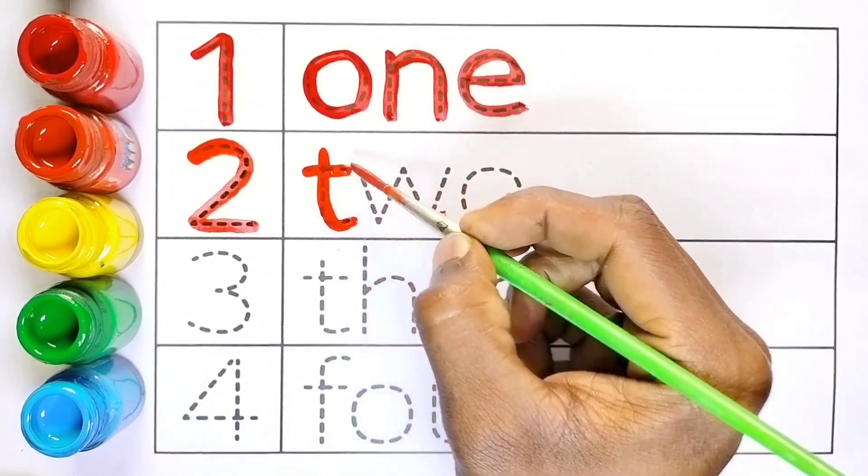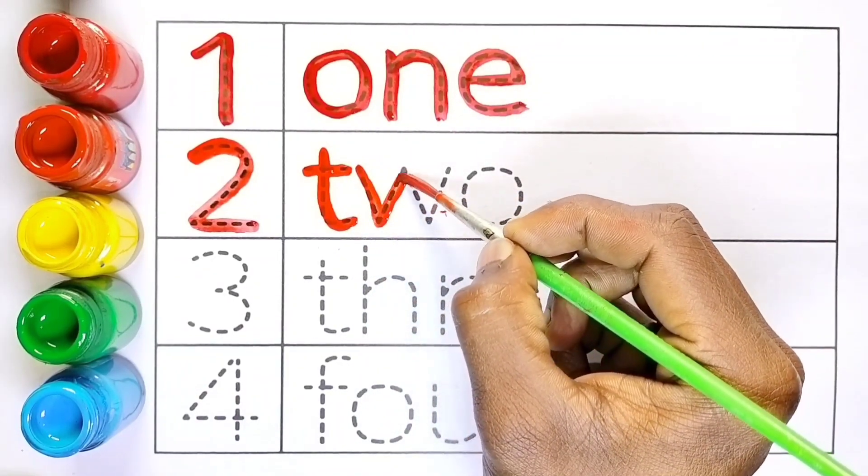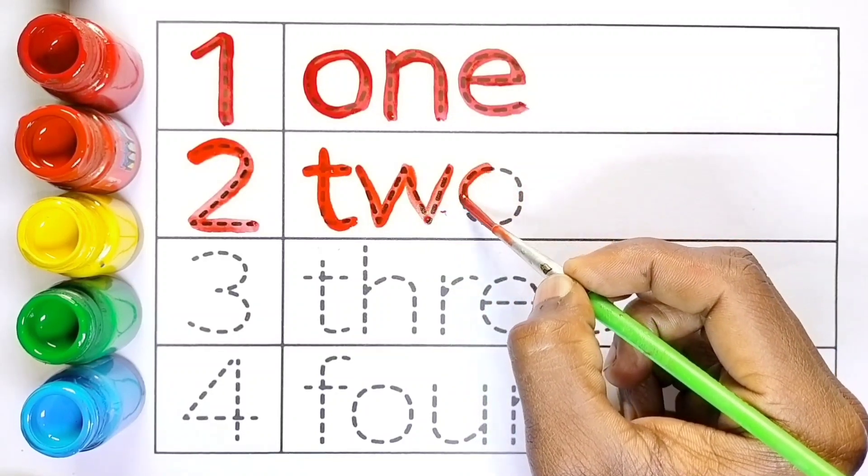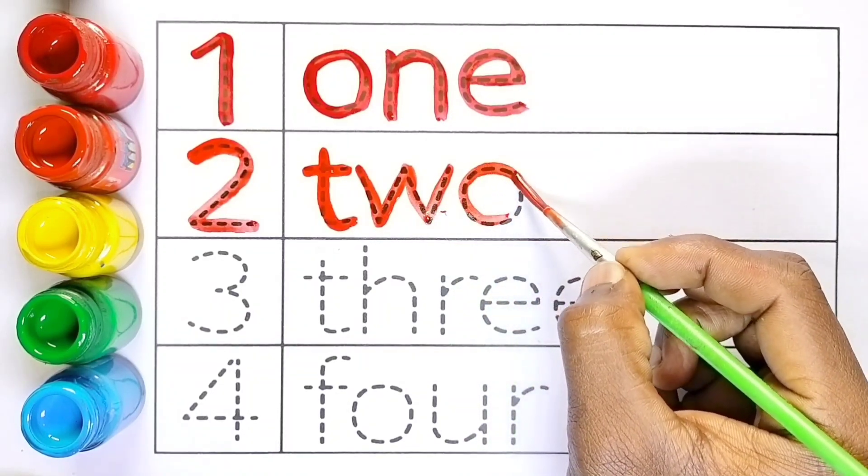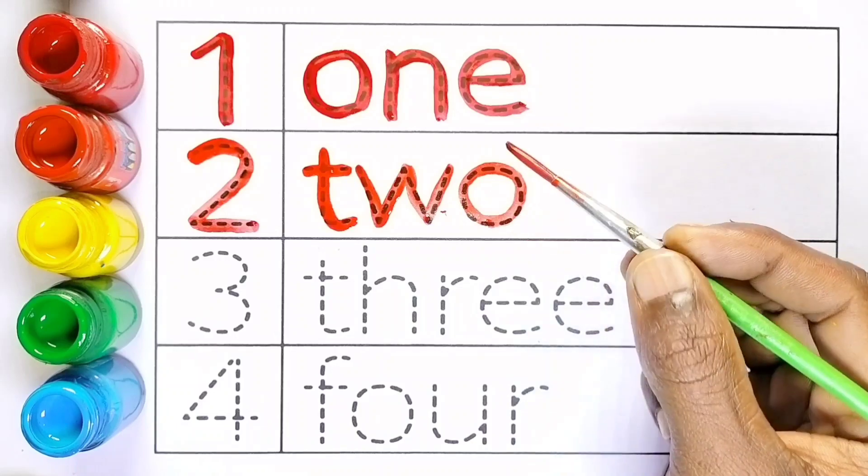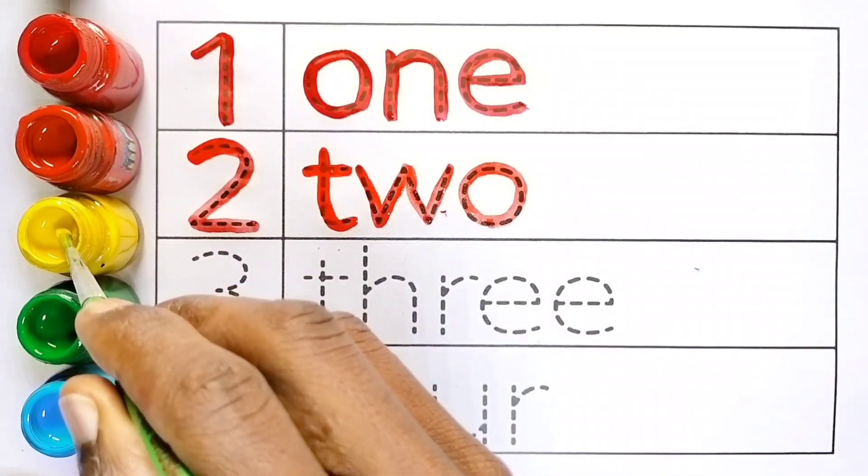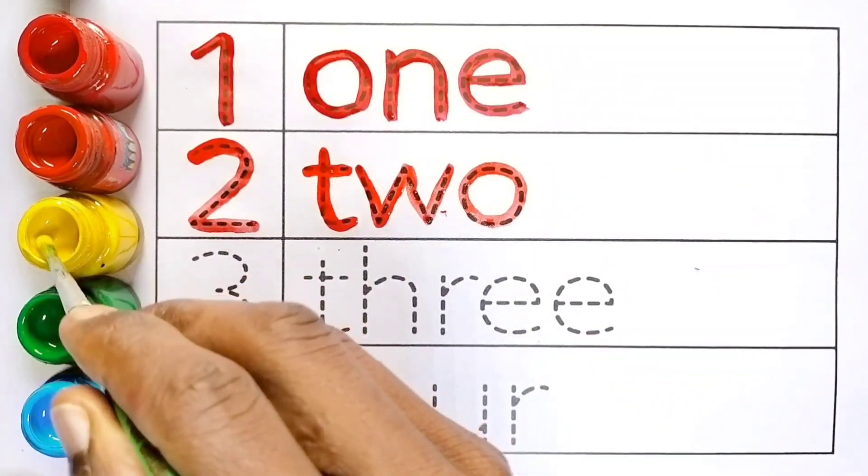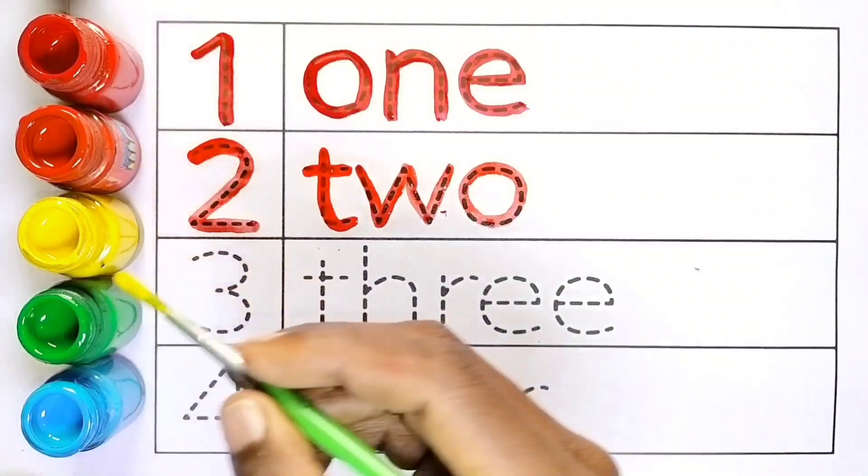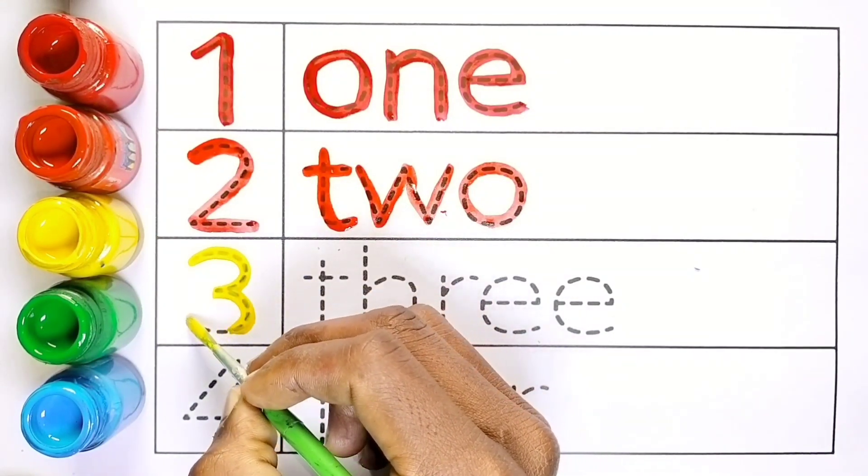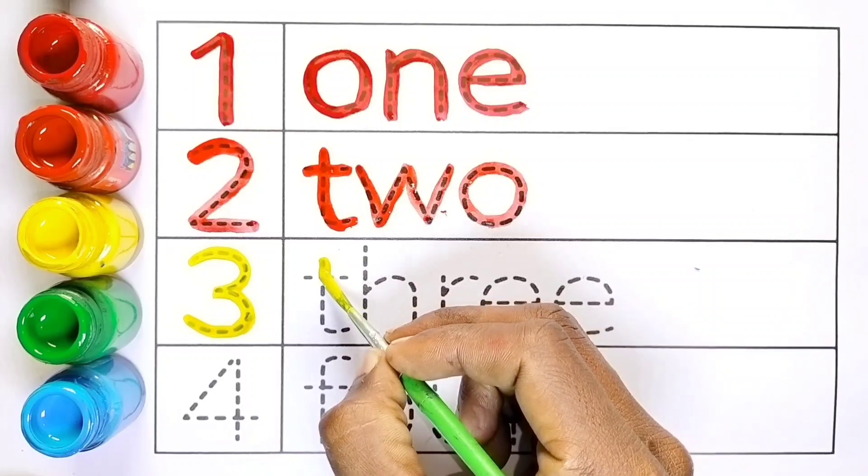T, W, O. Two, two matlab do. Yellow color. Three, T.